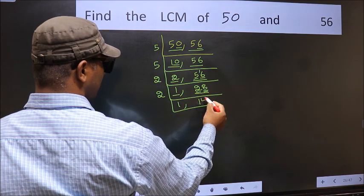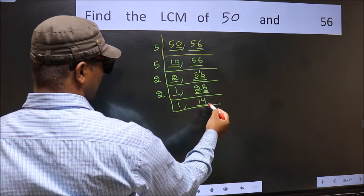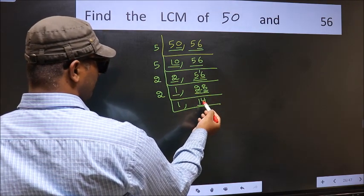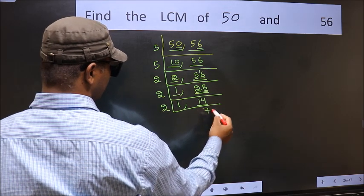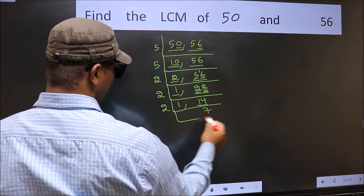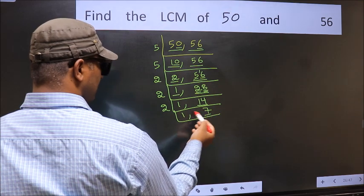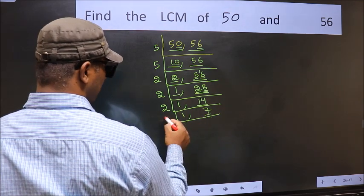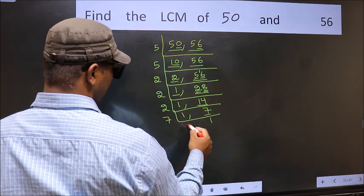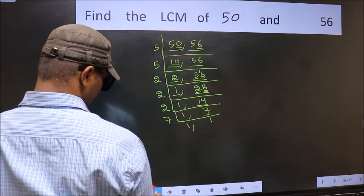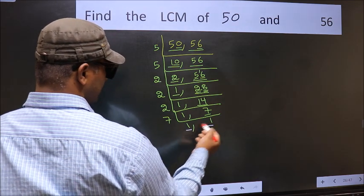Now here we have 1 and 4. 14 is 2 sevens are 14. Now we have 7. 7 is a prime number, so 7 ones are 7. So we got 1 in both places.